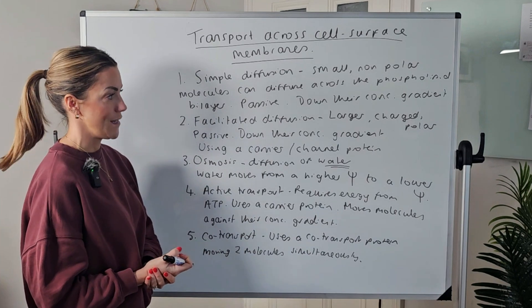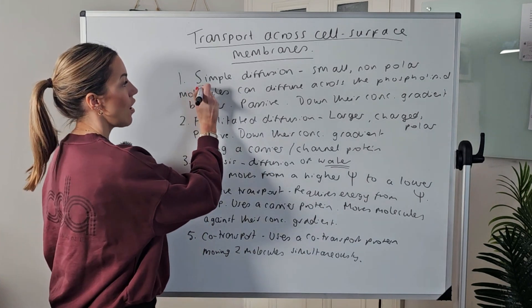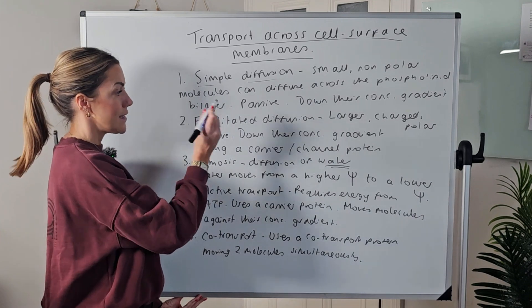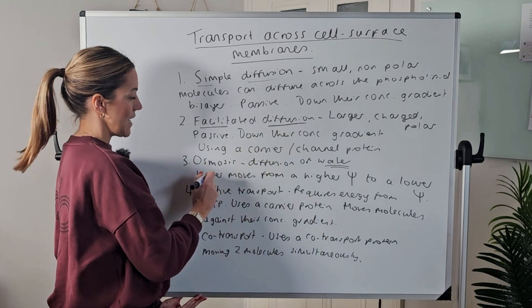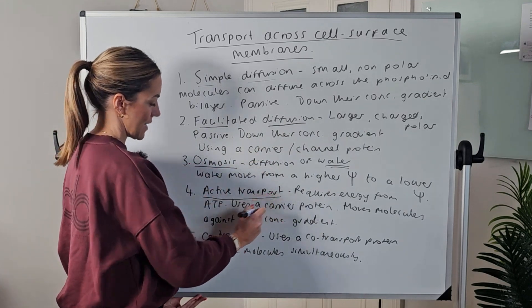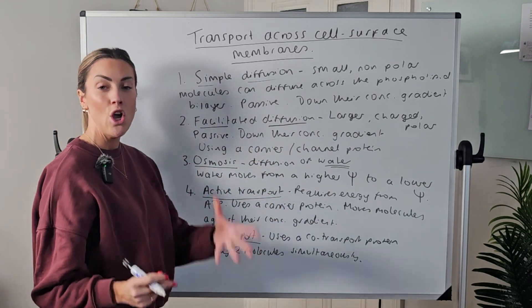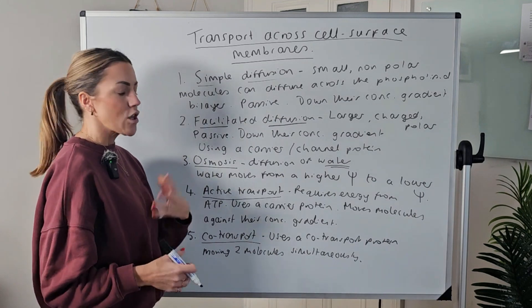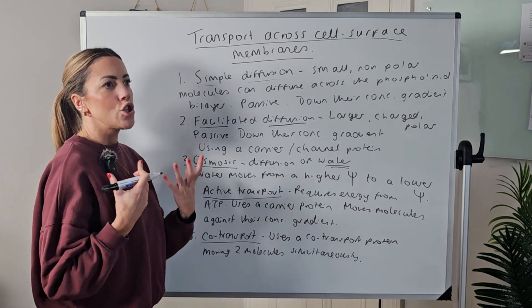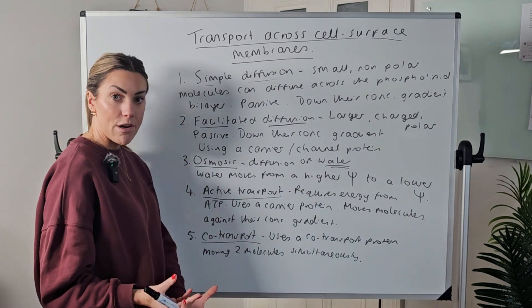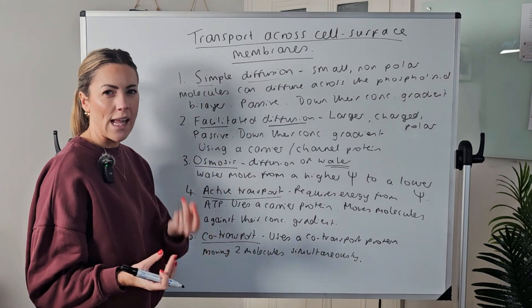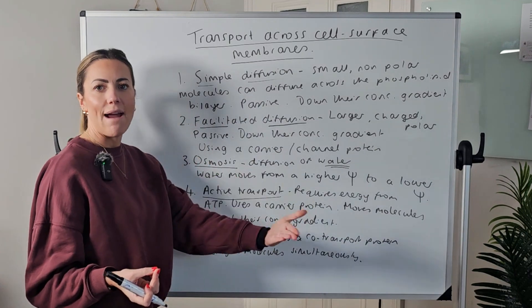So we've got five processes basically to learn for A-level: simple diffusion, facilitated diffusion, osmosis, active transport, and co-transport. You should be able to describe the key features of each, and always think things like does it require energy, does it require a protein, which direction is the substance moving - they're kind of the three comparative ideas that we should know for these different methods of transport.